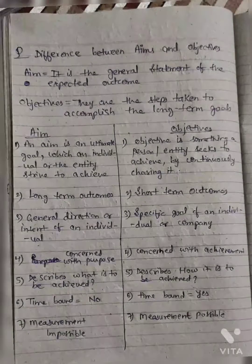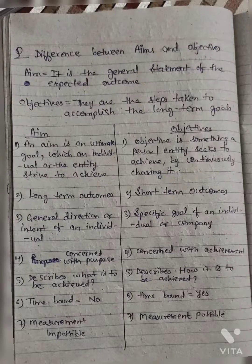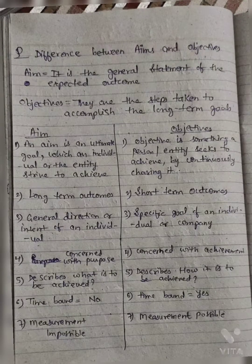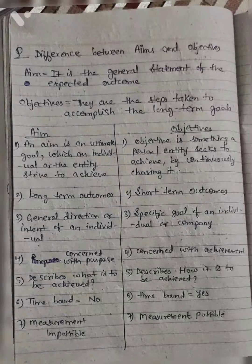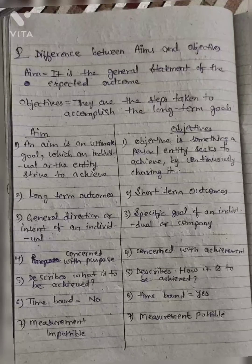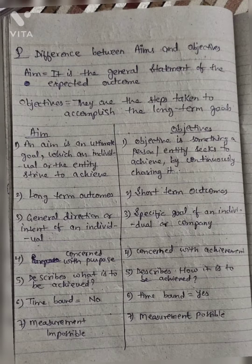Aim refers to the general direction or intent of an individual. Objective is the specific goal of an individual or company. Aims are concerned with purpose, while objectives are concerned with achievement.